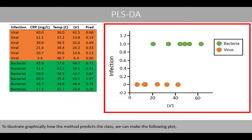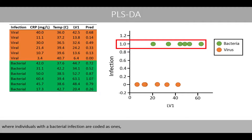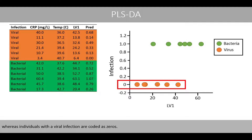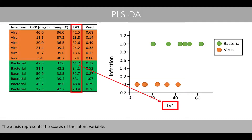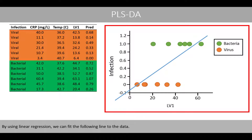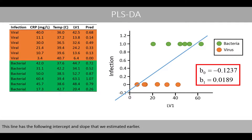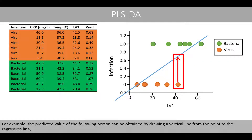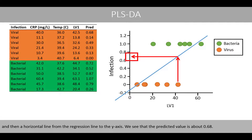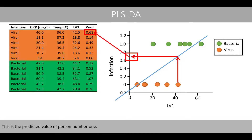To illustrate graphically how the method predicts the class, we can make the following plot, where individuals with a bacterial infection are coded as ones, whereas the individuals with a viral infection are coded as zeros. The x-axis represents the scores of the latent variable. By using linear regression, we can fit the following line to the data. This line has the intercept and slope that we estimated earlier. The predicted value of a given person can be obtained by drawing a vertical line from the point to the regression line, and then a horizontal line from the regression line to the y-axis. We see that the predicted value is about 0.68, which corresponds to the predicted value of person number 1.